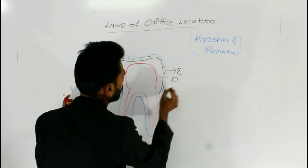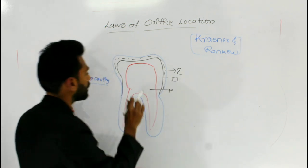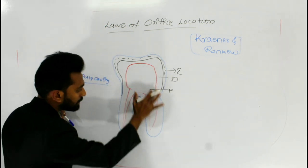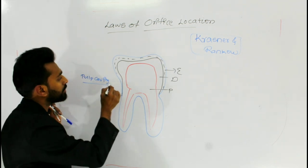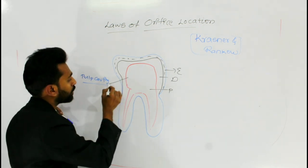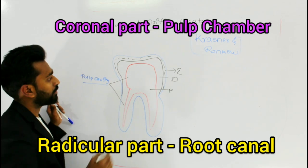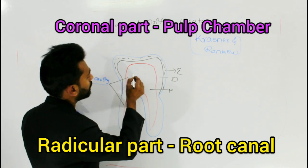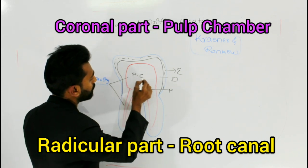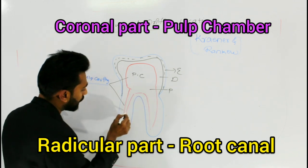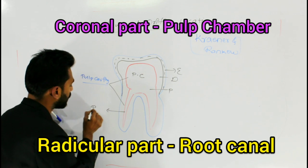We have enamel, dentine, and pulp — this entire structure is called the pulp cavity. The pulp cavity is divided into the coronal portion and the radicular portion. The coronal portion is called the pulp chamber, and the portion present in the radicular area is called the root canal.